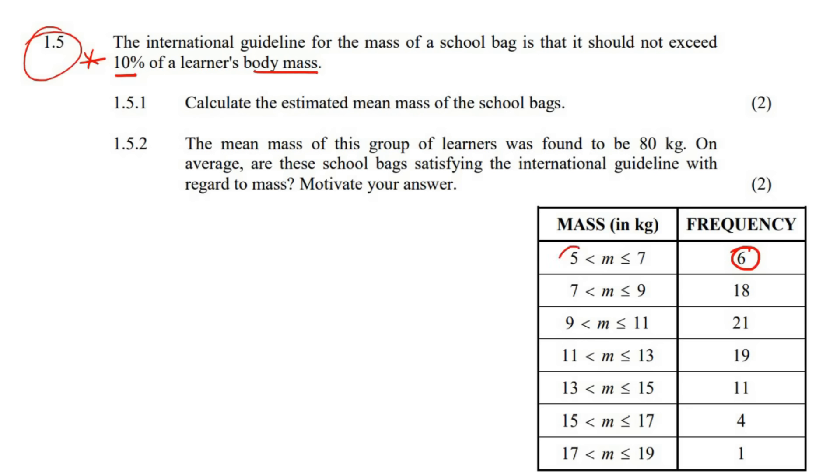And some of them have a mass anywhere between 5 and 7. So what you do is you take the middle number, so six kilograms. That's how heavy the bag is. But how many learners are there with a six-kilogram bag? There are six of them. So you could imagine that we would have said 6, 6, 6, 6, 6, 6. Then there would be 18 learners who have an eight-kilogram bag. Now, obviously, I'm not going to write that out 18 times. But if you had to then go calculate the average or the mean, you would have added all of these numbers together.